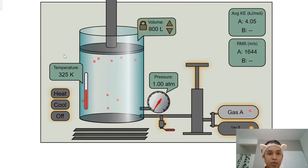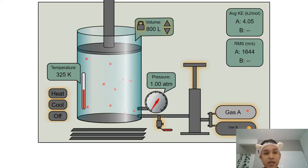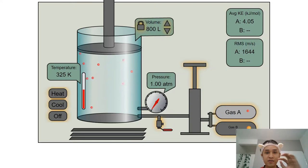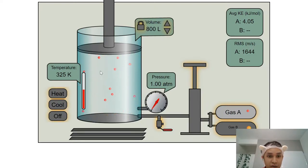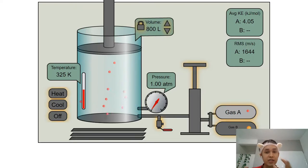In this simulation for Boyle's Law, temperature is kept constant at 325 Kelvin — I'm not going to adjust the temperature. I'll show you what happens when we increase or decrease the volume and how it affects the pressure. Pressure is due to the collision of air molecules — you can see the red balls bouncing off. The collision of air molecules with the container wall is what gives you the pressure. If the collision is faster, your air pressure will be higher.